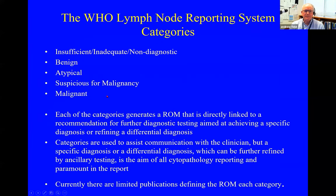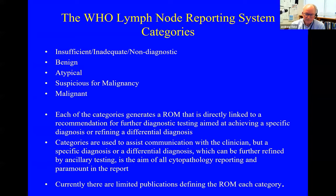There are five categories: insufficient/inadequate/non-diagnostic, benign, atypical, suspicious for malignancy, and malignant. We are generating from the literature a risk of malignancy for each category, which is directly linked to a recommendation for further diagnostic testing aimed at achieving a specific diagnosis or refining a differential diagnosis. The categories are used to communicate with the clinician, but a specific or differential diagnosis — which can be further refined by ancillary testing — is still the aim of cytopathology reporting and is paramount in the report. The categories are to assist the clinician in management of the patient, but we're still trying to reach as specific a diagnosis as we can.